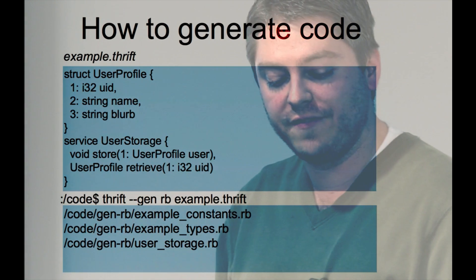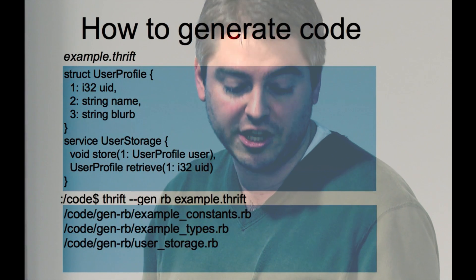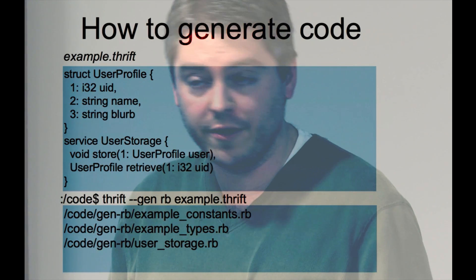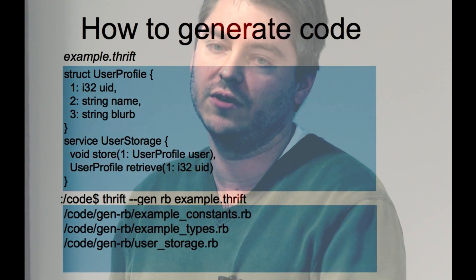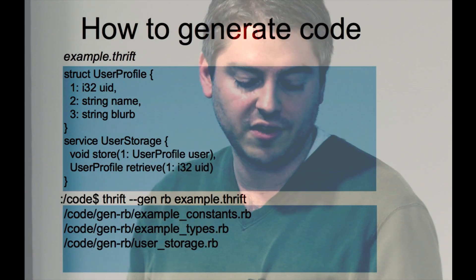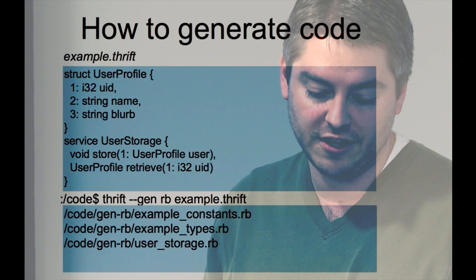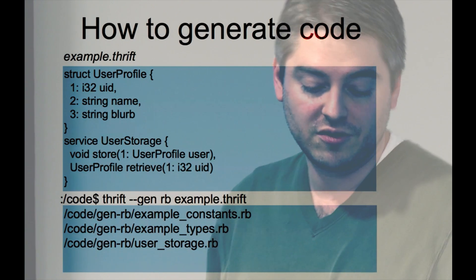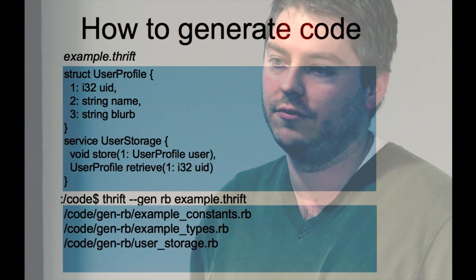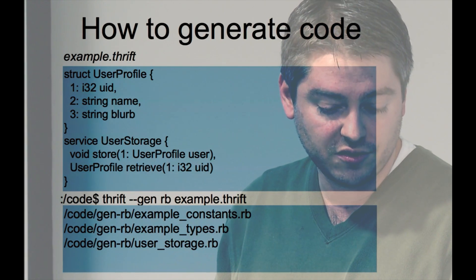Once you have the Thrift file written, you just do thrift generate. If you do thrift without the generate, it gives you a list of all the languages. I don't know why they used RB instead of Ruby, but they did. So you can quickly generate all the different code that you want to be able to use with the service.